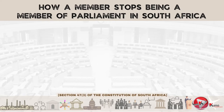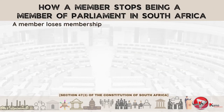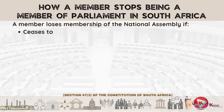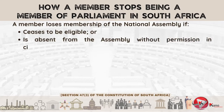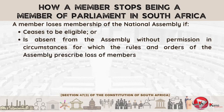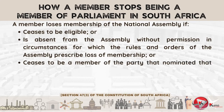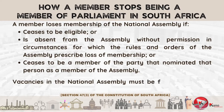According to the Constitution, a member of Parliament can also lose his or her membership in Parliament. A member loses membership of the National Assembly if he or she ceases to be eligible, or is absent from the National Assembly without permission as prescribed by the rules and orders of the National Assembly, or ceases to be a member of the political party that nominated him or her as a member of the National Assembly. Where vacancies in the National Assembly occur, they must be filled in terms of national legislation.